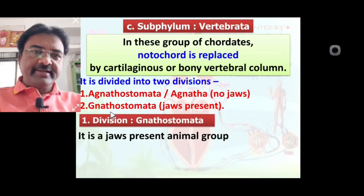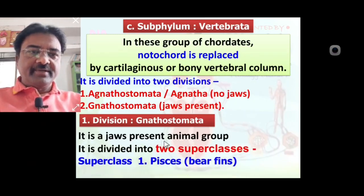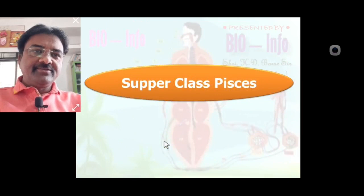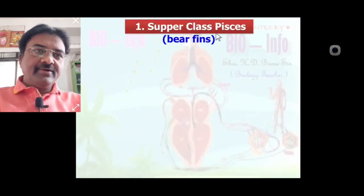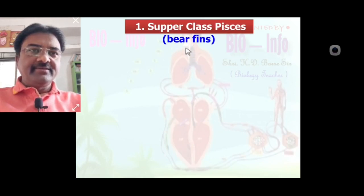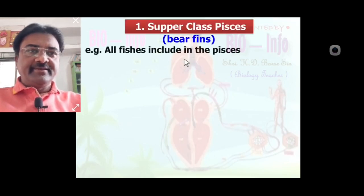Gnathostomata contains all animals that show present jaws. It is divided into two superclasses: Pisces and Tetrapoda. We learn superclass Pisces first. In superclass Pisces, all members bear fins. Fins are the locomotory organ. Animals bearing fins are included in superclass Pisces. All fishes are included in the Pisces group.